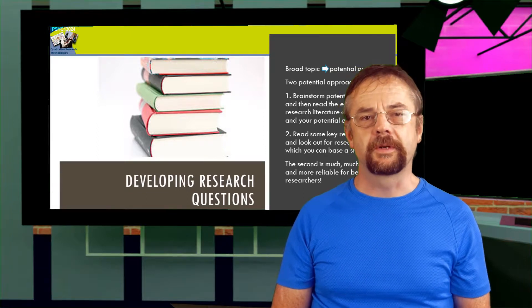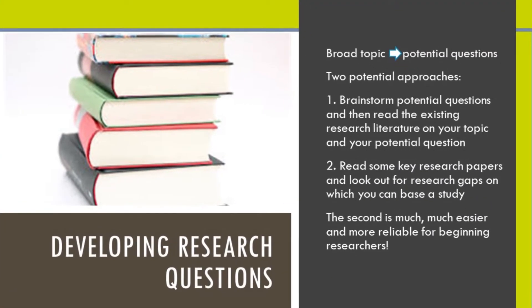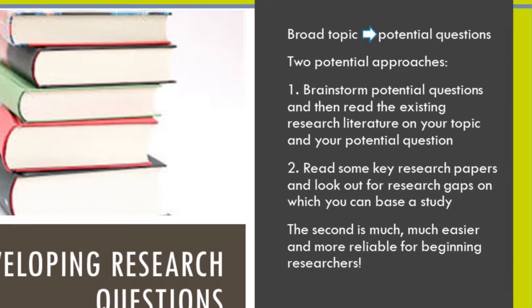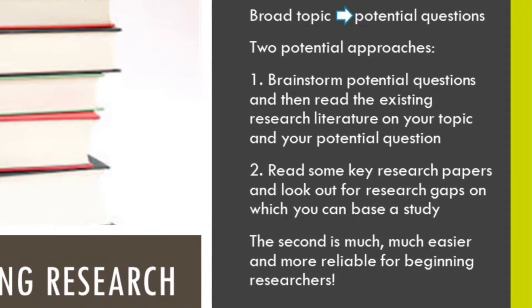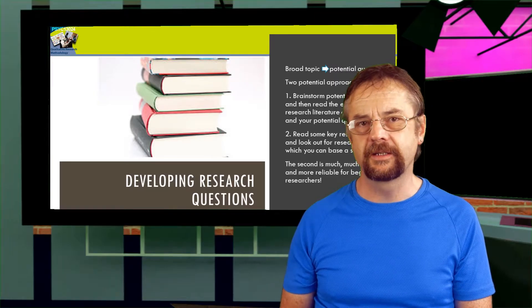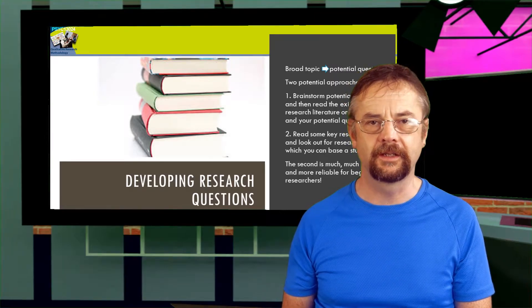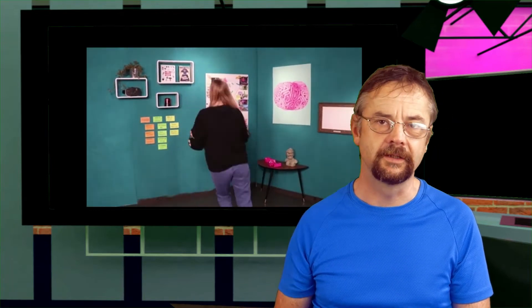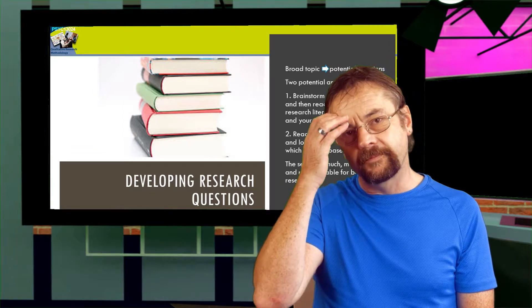So how do you get to your question? There are two approaches. You can brainstorm with other people to see if you can come up with something, and then go to the research literature to see if it's already been asked. When you're just starting out in research, this is not a good idea, as you will more often than not come up with a question that has already been answered. You'll brainstorm a question, go to the literature, find it's already been answered, and so on — it just goes on forever.